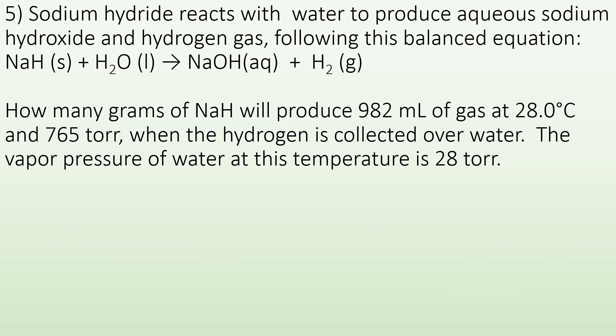Number five: sodium hydroxide reacts with water to produce aqueous sodium hydroxide and hydrogen gas. How many grams of NaH will produce 982 milliliters of gas at 28°C and 765 torr when the hydrogen is collected over water? The vapor pressure of water at this temperature is 28 torr.